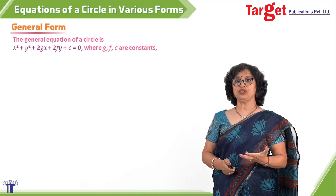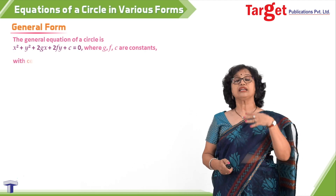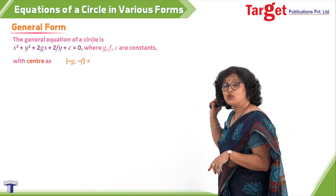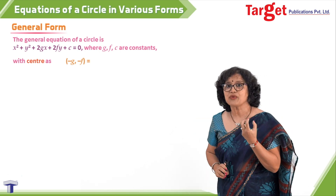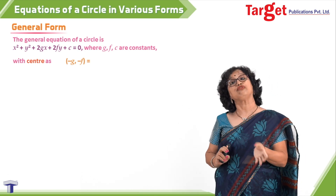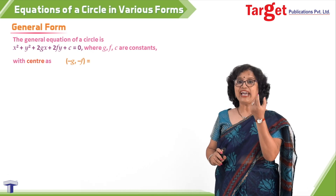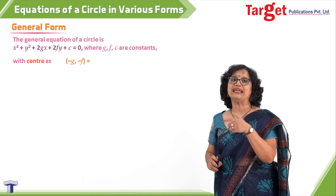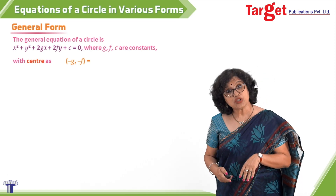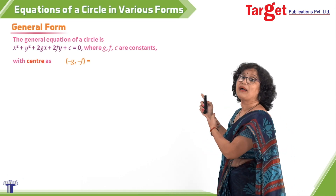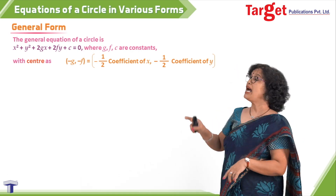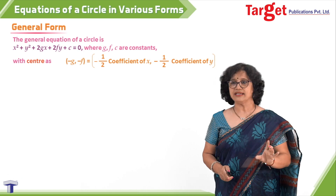If you use this as your standard equation, you should remember the corresponding center and radius. The center is (−g, −f). To see why: collect x² + 2gx and complete the square to get (x + g)², and similarly y² + 2fy gives (y + f)². In doing so you create terms g² and f² which must be removed. So the center is (−g, −f), remembered as minus half the coefficient of x and minus half the coefficient of y.